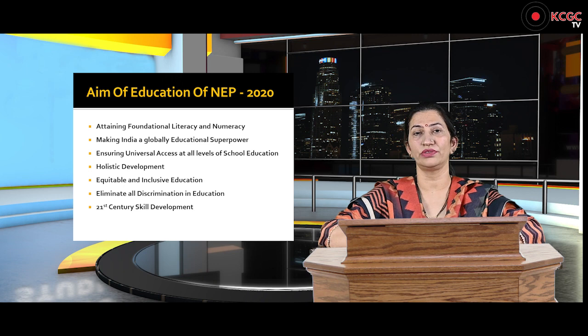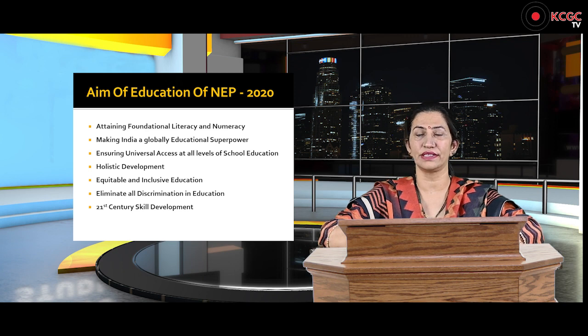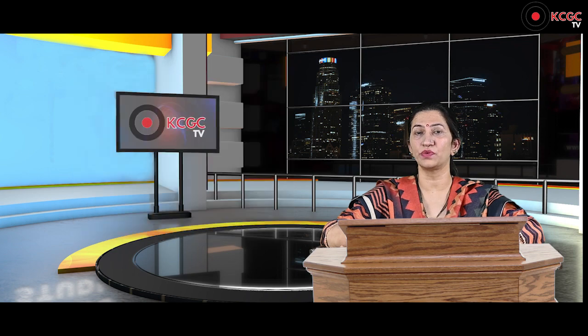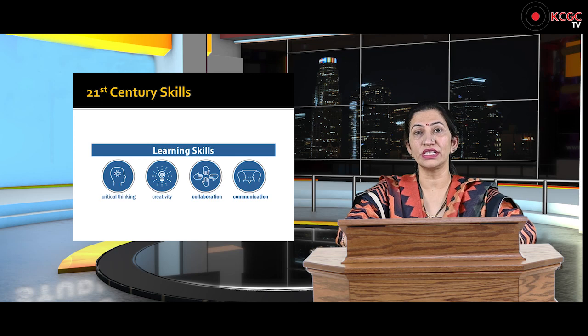The very first important aim of National Education Policy is to bring foundational numeracy and literacy by the year 2026-27. According to this, the crucial age of the child is up to six years and that should be dealt with in a very effective way while teaching them. For this, there is a change in the academic structure.